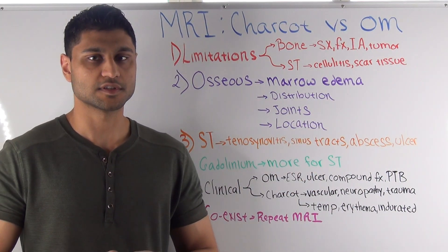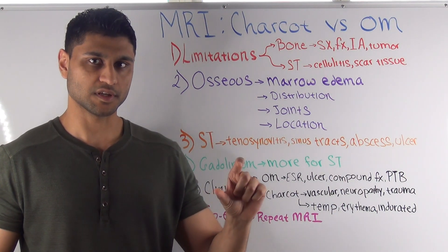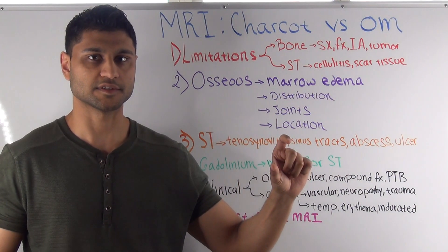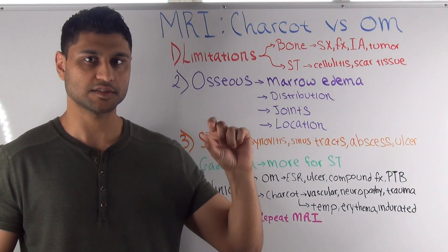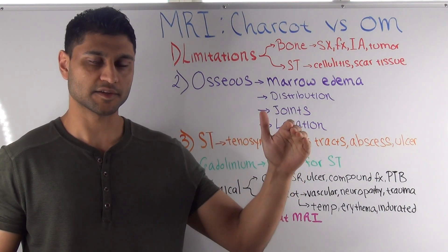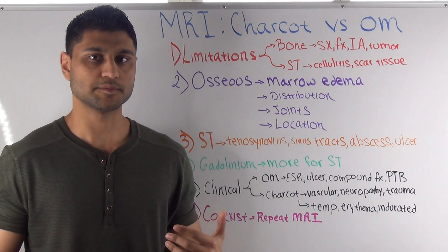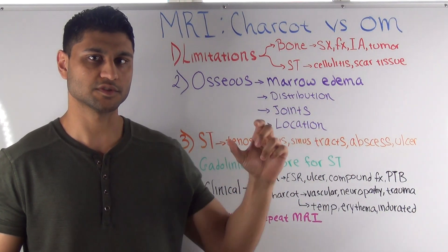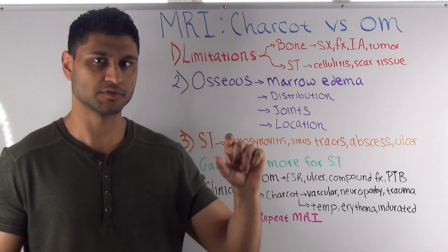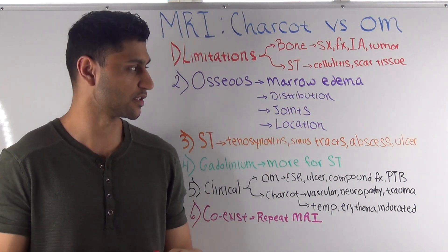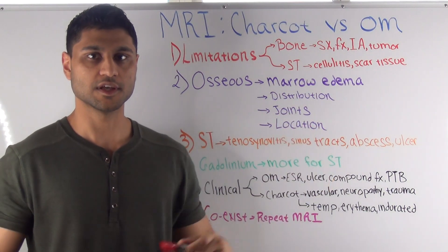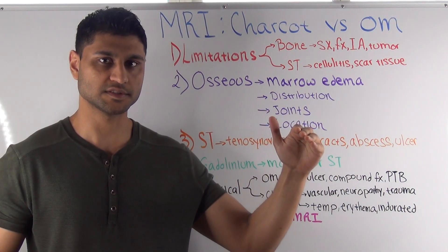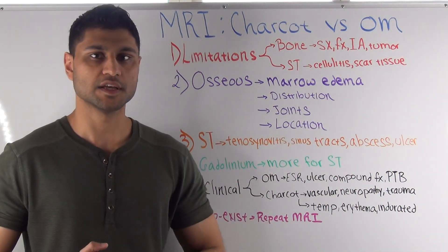In terms of distribution, for osteomyelitis the distribution will really be predominantly on one side of the joint. Going back to the first metatarsophalangeal joint — if you have osteomyelitis at the base of the proximal phalanx spreading into the metatarsal head, you'll see the majority of the proximal phalanx lit up, with only a portion of the metatarsal head showing abnormal signal. So in osteomyelitis, you see more predominance of bone marrow edema on one side of the joint versus the other. In Charcot, by contrast, you can see symmetrical subchondral edema — the same level of edema between the base of the proximal phalanx and the head of the metatarsal.